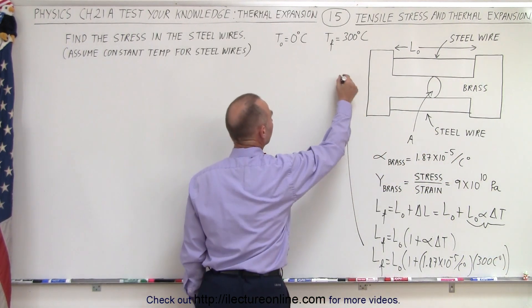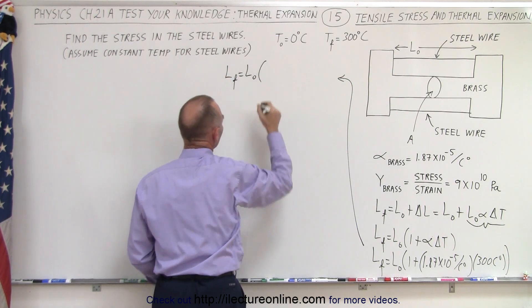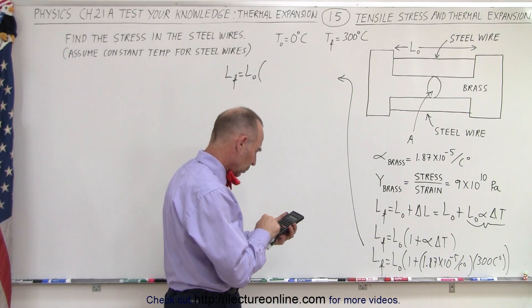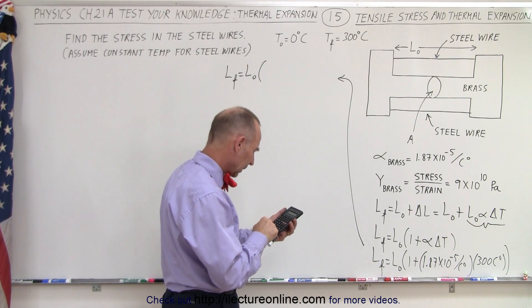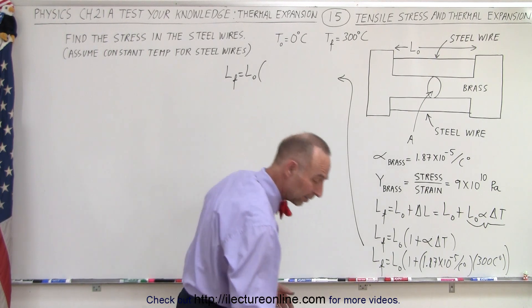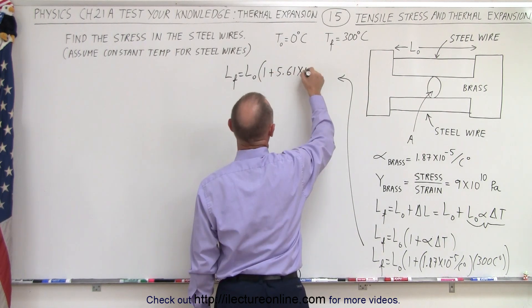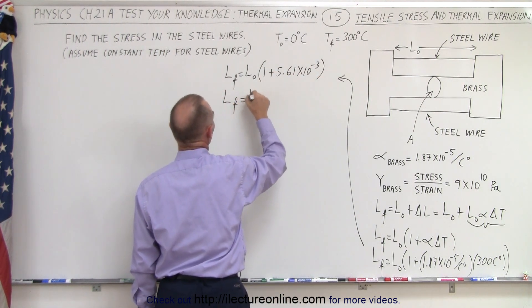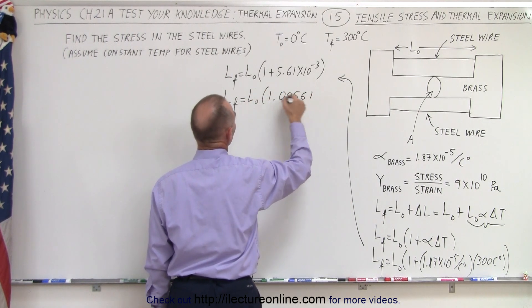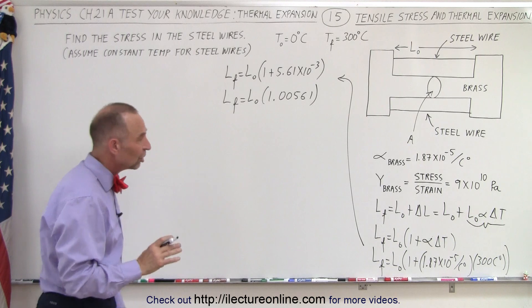And so I continue up here since I run out of room down there. Length final equals length initial times 1.87e-5 times 300 equals 5.61 times 10 to the minus 3. So that would be L final equals L initial times 1 plus 0.00561. So delta minus 3 moves it over three places. There we go. So now we have the change in the length.